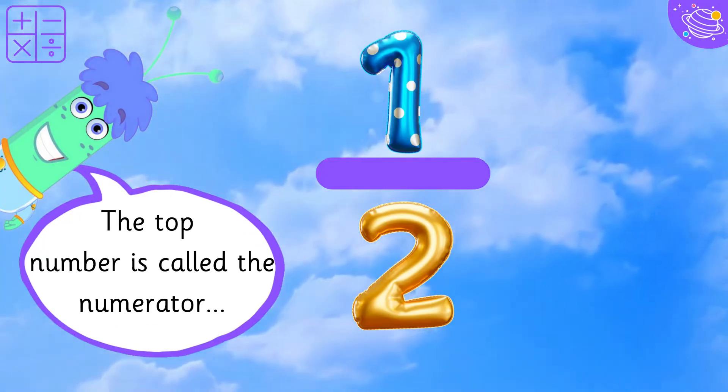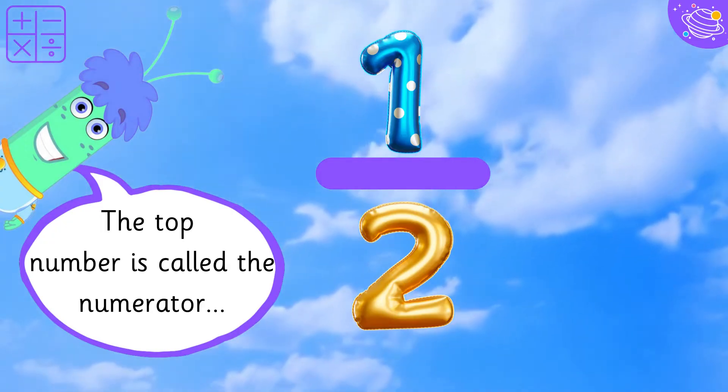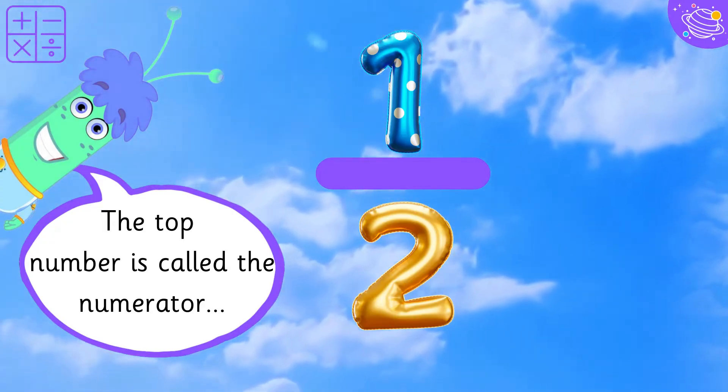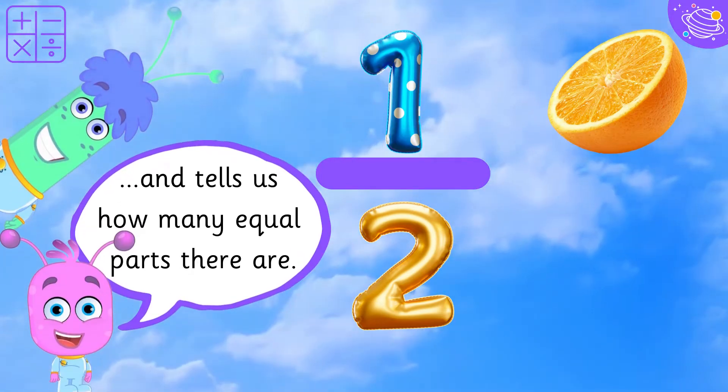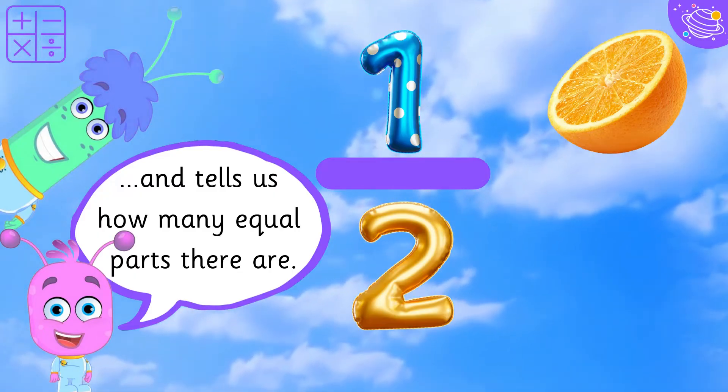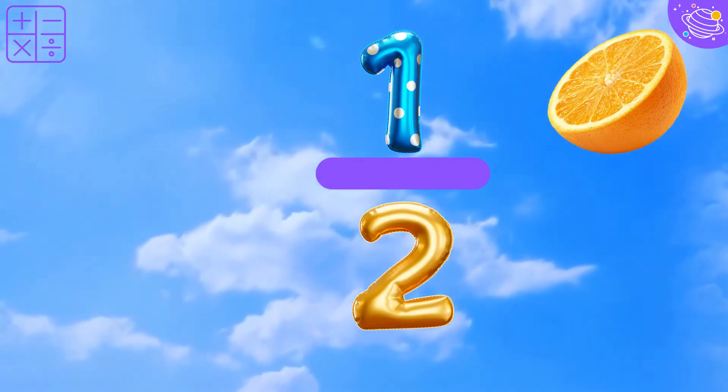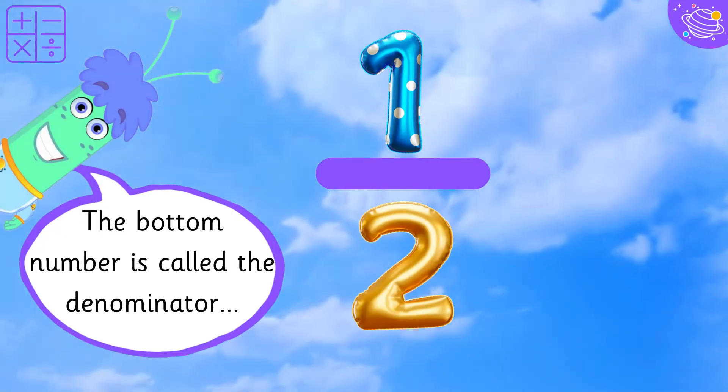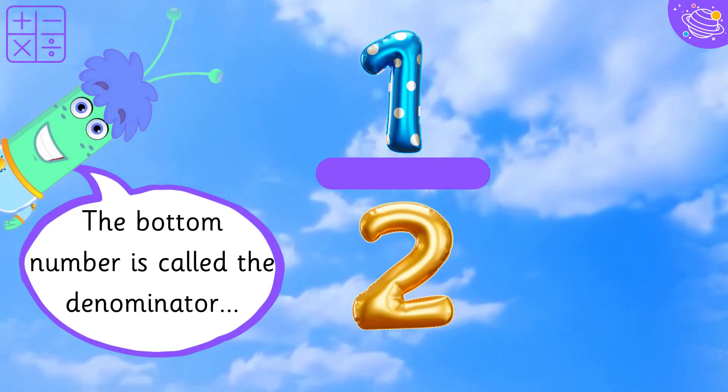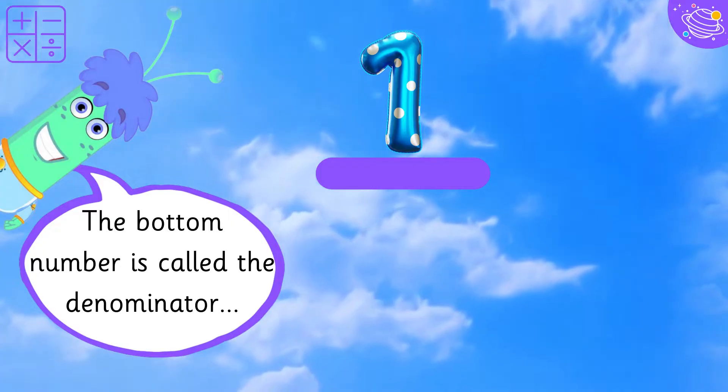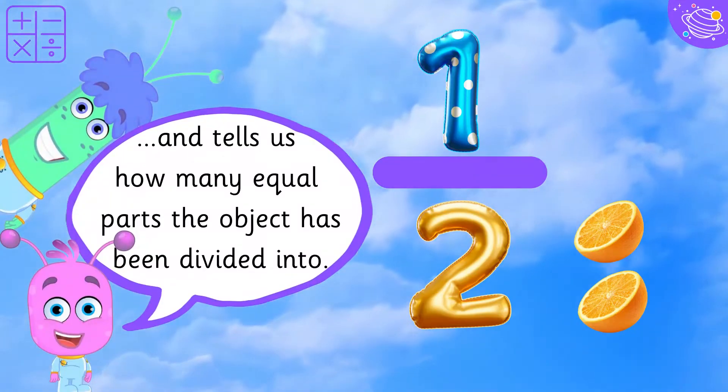The top number is called the numerator and tells us how many equal parts there are. The bottom number is called the denominator and tells us how many equal parts the object has been divided into.